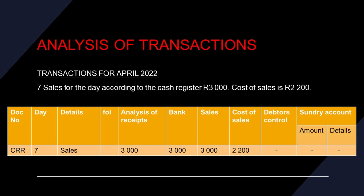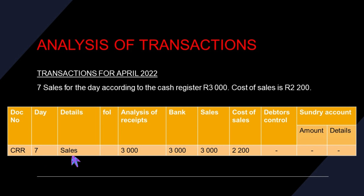Now let's take a look at our third transaction. On the 7th of April 2022, sales for the day according to the cash register. In our previous transaction we issued a receipt, but in this case it is according to the cash register — so the document type is CRR. We received R3,000 as sales and cost of sales is R2,200. On which day? The 7th of April. Details: since this transaction did not specify a person who made the sale, we just say 'sales' or 'cash.' Analysis of receipt: R3,000.